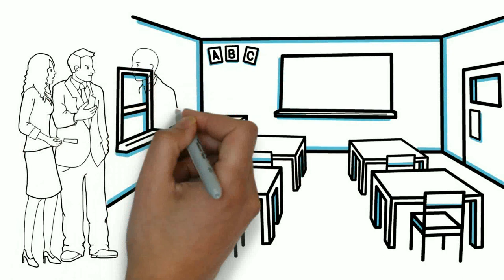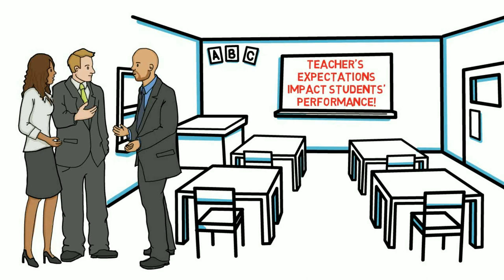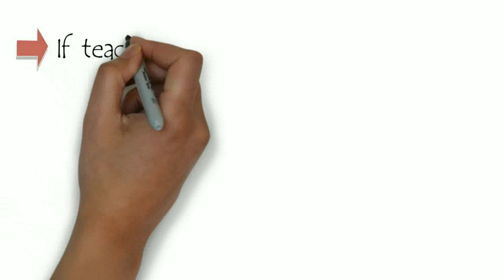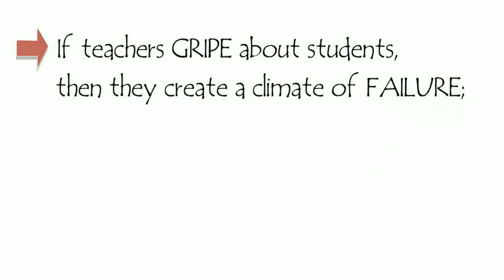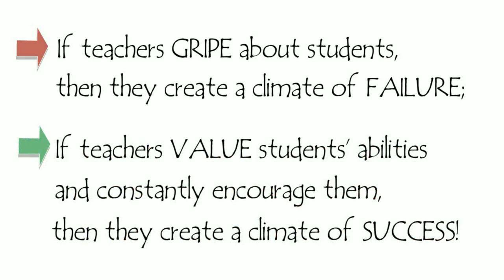The results of the experiment of Rosenthal and Jacobson show that teachers' expectations indeed influenced students' performance. Hence, some of the important implications of the Pygmalion effect in education is that if teachers gripe about students, then they create a climate of failure. However, if teachers value their students' abilities and constantly encourage them, then they create a climate of success.